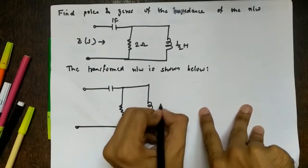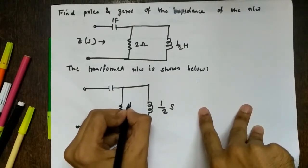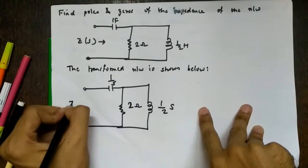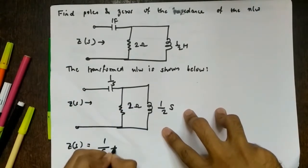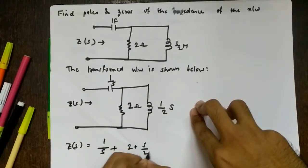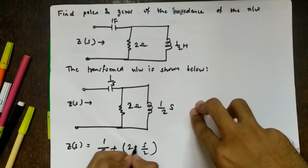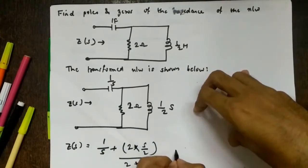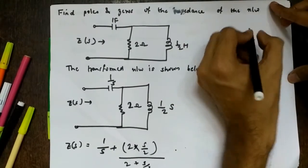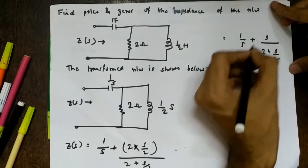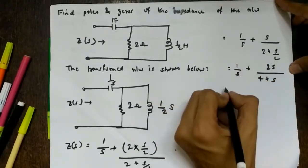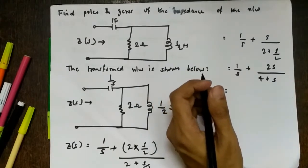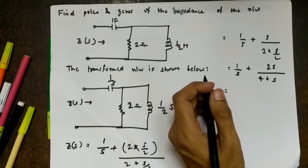A half-henry inductor becomes Ls = s/2, and the other element is a 2 Ω resistor, so its impedance is 1/s. Therefore Z(s) equals the series combination of 1/s with the parallel combination of 2 and s/2. That gives Z(s) = 1/s + [2 · (s/2)] / [2 + s/2], which simplifies to 1/s + s/(2 + s/2). We simplify, making the leading coefficient of s equal to 1, yielding n/s + 2s/(4 + s).